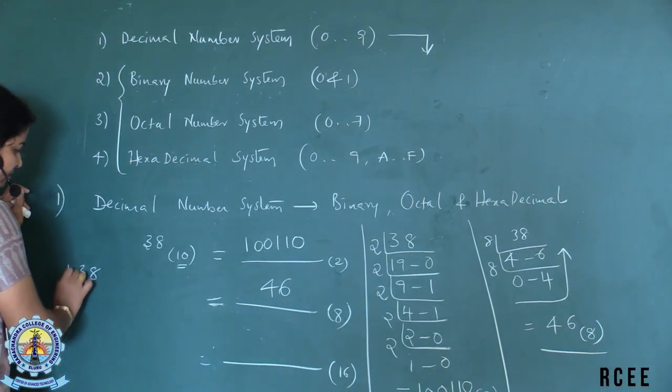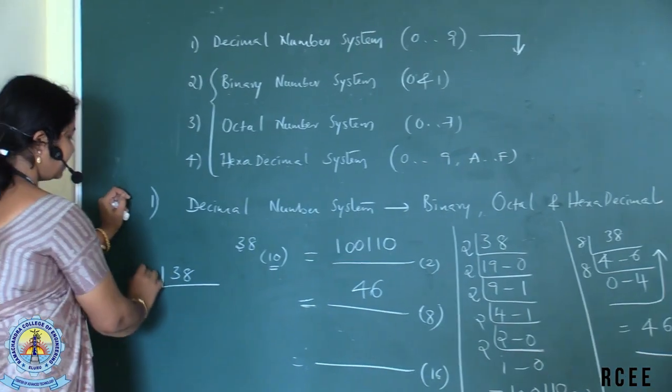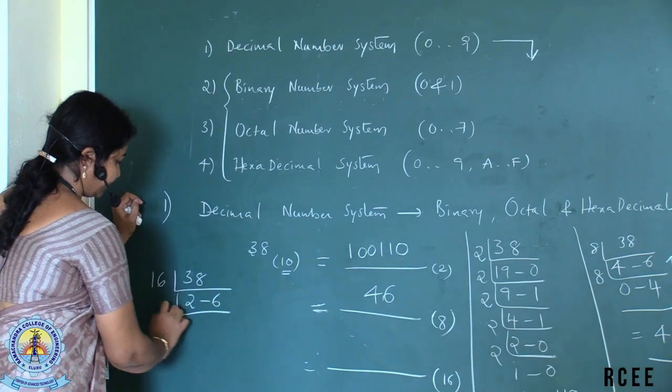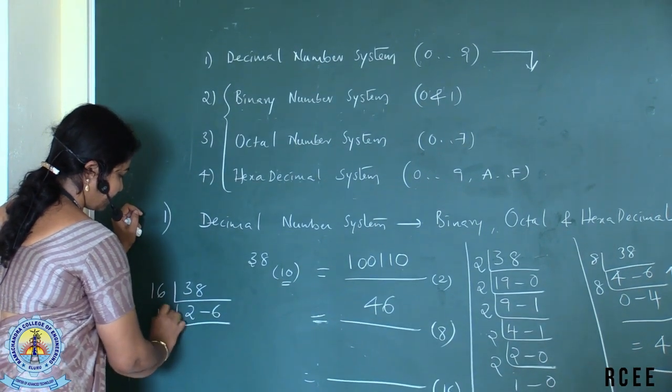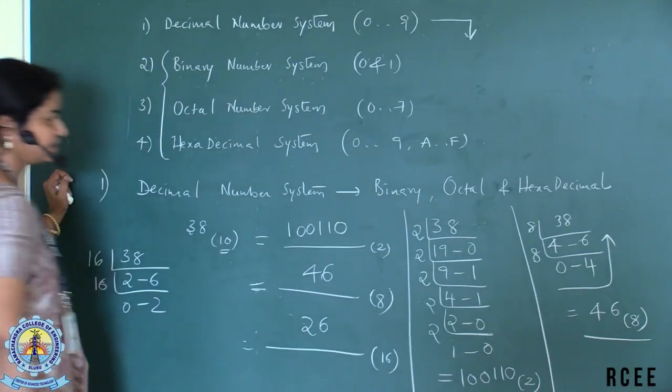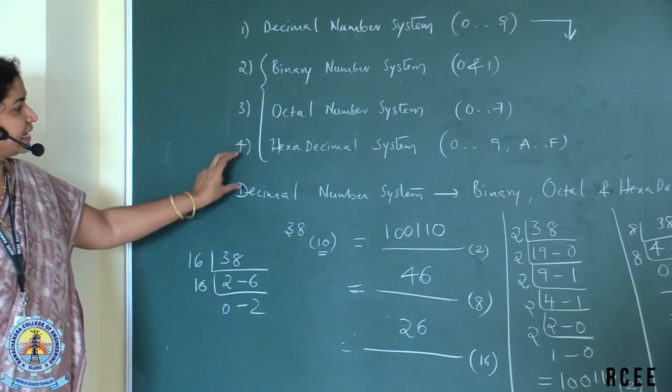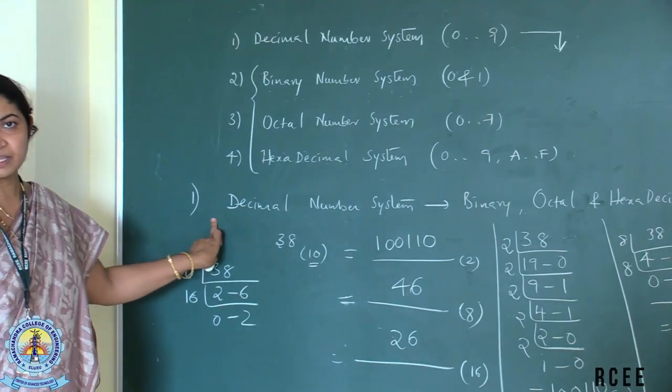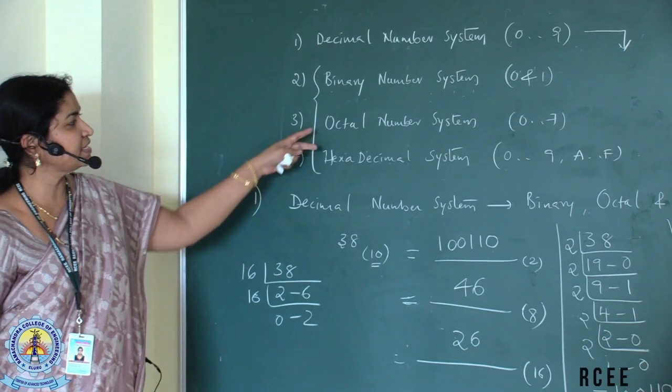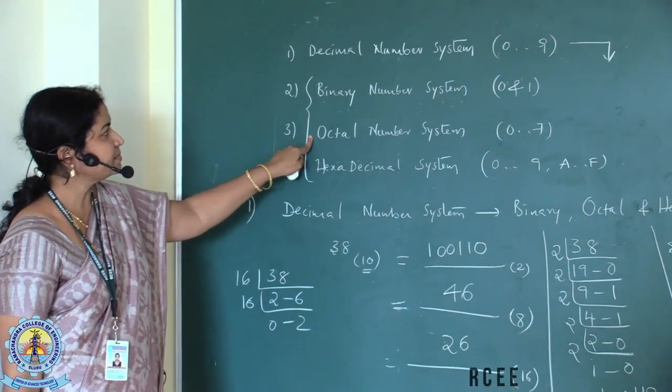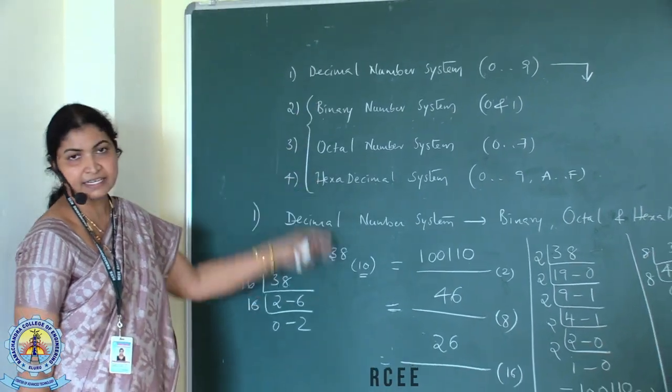Similarly, to get into hexadecimal, we will divide it by 16 to 16, 32, 6 with 0 to base 2 that is equivalent to 26 to base 16. Thus, we can convert any number system into different other number systems in this way. In the next example, we will see octal number system to decimal, binary and hexadecimal.